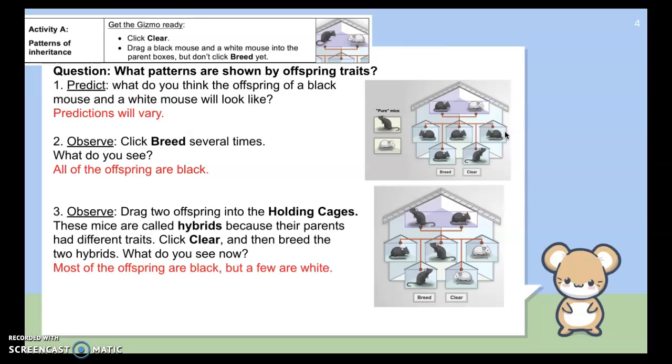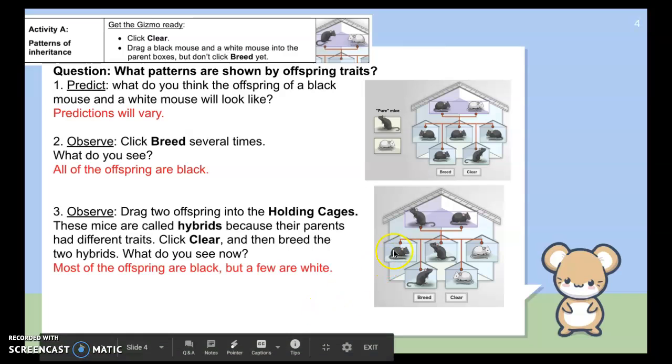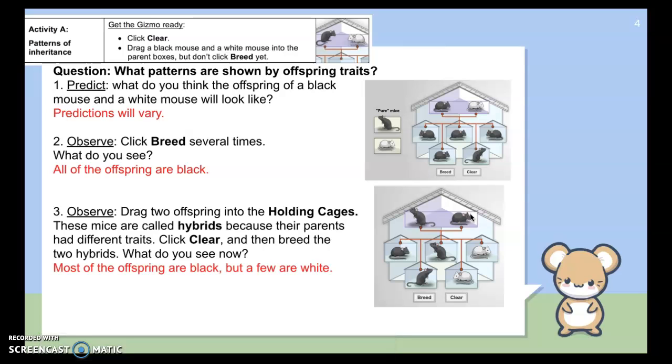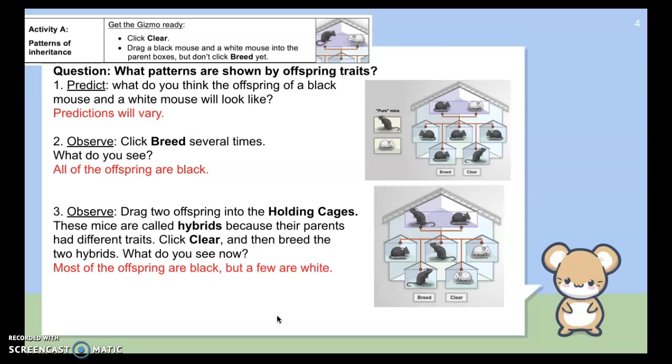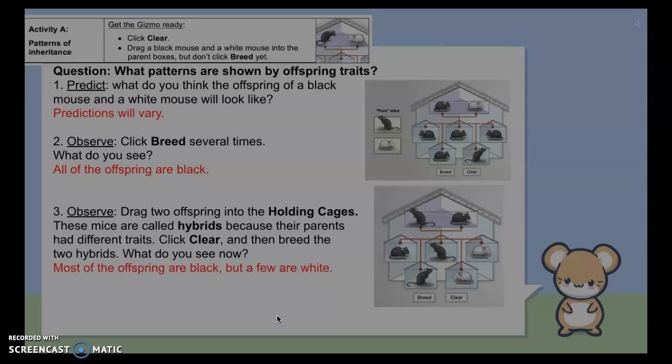So then they asked you to take two of these offspring and put them in the holding cages. And so you can't see them, but if you remember, down below there was a holding cage. So you could take any two offspring, then click the clear button, and then drag those offspring to be the parents. So now you have two parents that are hybrid. And then it said click breed again. What did you notice about the offspring in this generation? Not all of them were black. A couple of them ended up being white. So again, this is similar to what Mendel saw in his experiments. Some of these phenotypes that he was seeing now reappeared in this second generation of offspring.